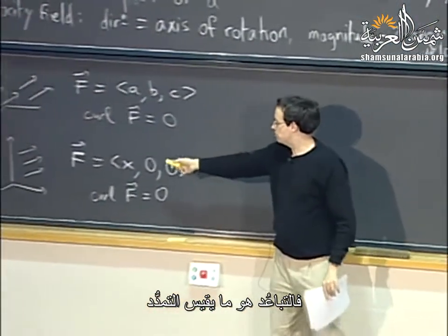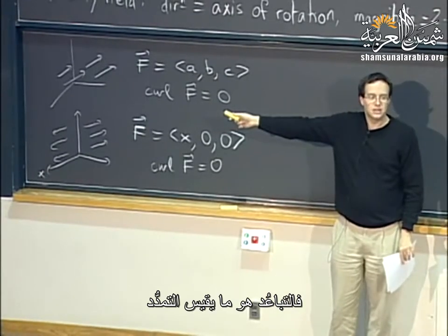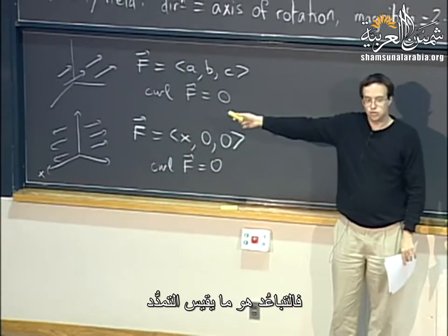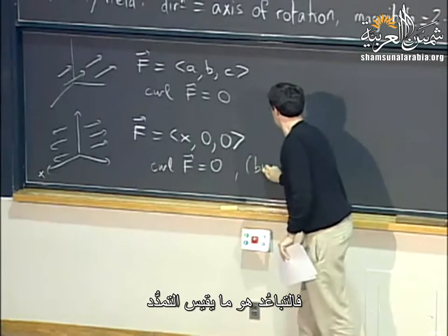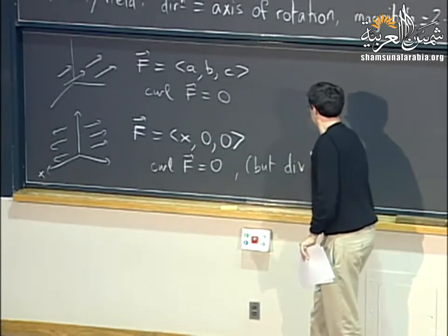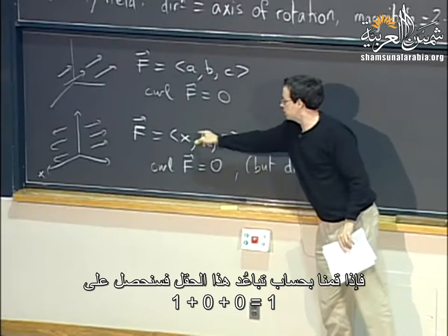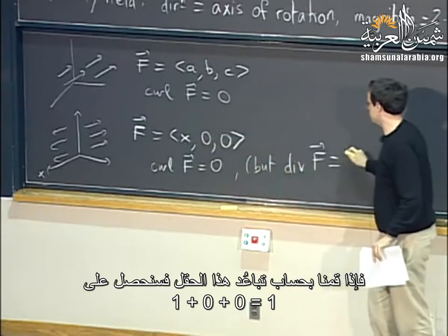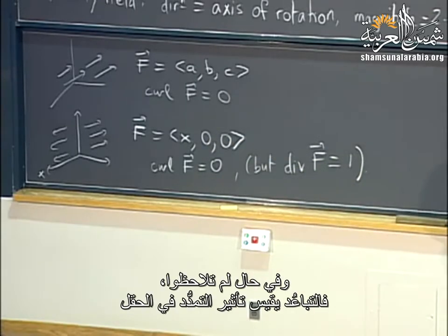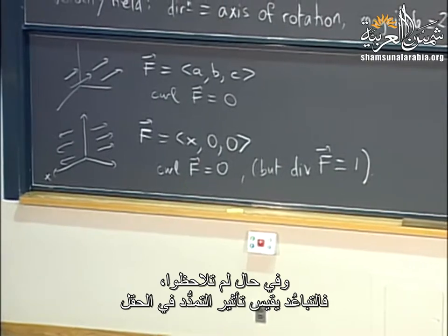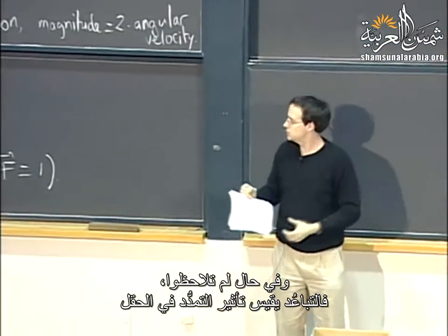What measures expansion and stretching is actually divergence. If you take the divergence of the field x·i, you get one plus zero plus zero, which is one. Divergence precisely measures this stretching effect in your field.